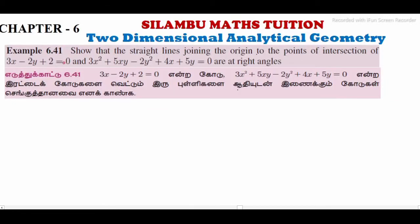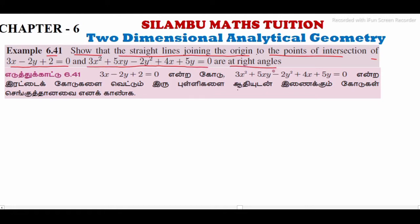Hi student, this is Salamu Mack's tuition 11th standard example 6.41. Show that the straight line joining the origin to the point of intersection of 3x minus 2y plus 2 equals 0, and 3x squared plus 5xy minus 2y squared plus 4x plus 5y equals 0, are at right angles.